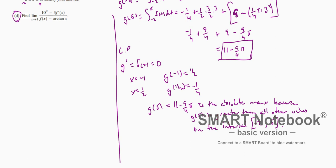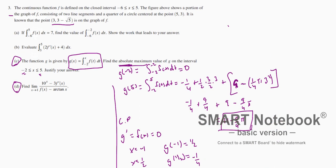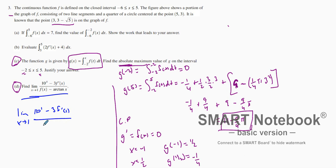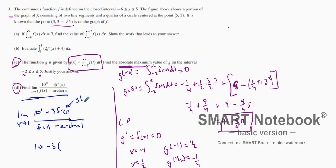Now let's look at part D. We're asked to find the limit. Normally when we find limits we just plug in the values. As x approaches 1, we plug in 1: we get 10, then we have three times f prime of one on the bottom, and then we have f of one minus arctangent of one. We just need to determine if this produces a value. We have 10 minus three times f prime of one.